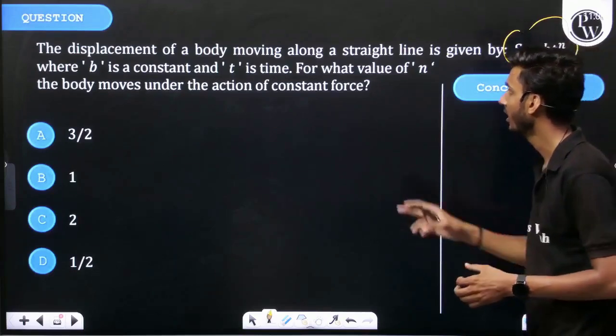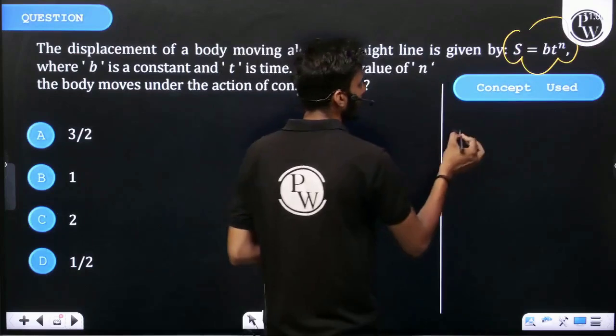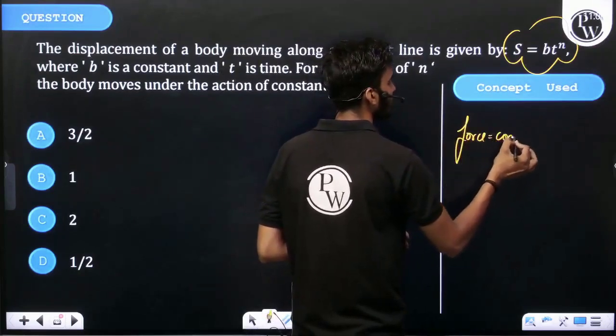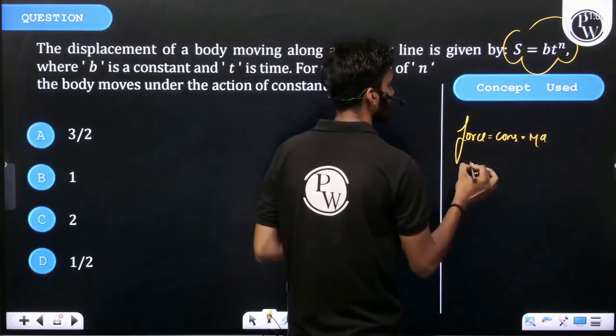Then we can say force is equal to constant, which equals ma. Then acceleration is also constant.